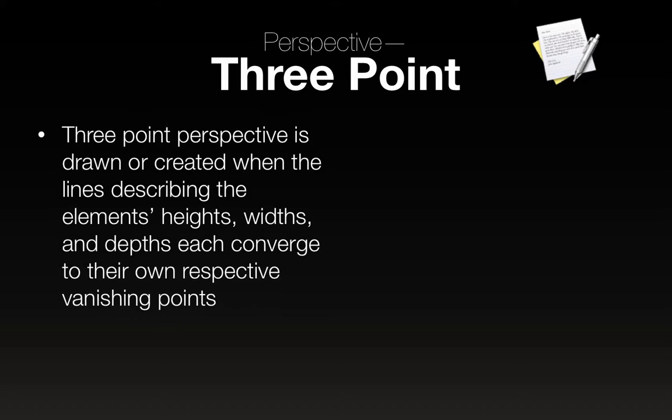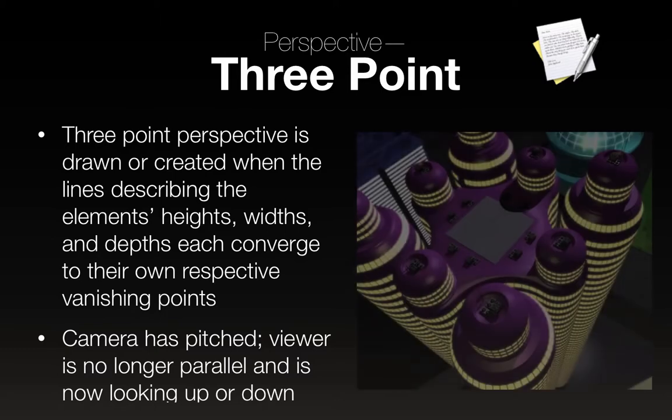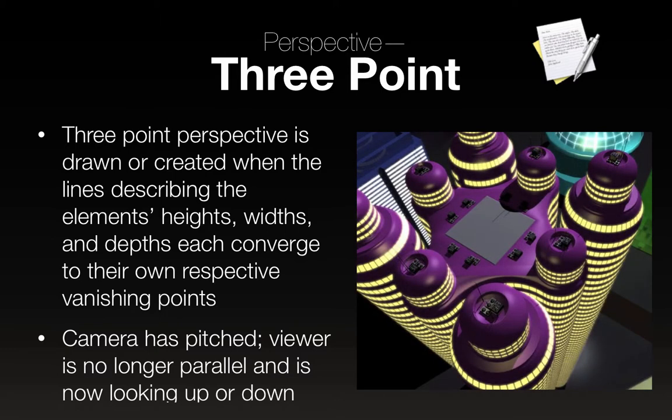Three-point perspective is created when the lines describing elements' heights, widths, and depths each converge to their own respective vanishing point. The camera has now pitched — the viewer is no longer parallel and is looking either up or down. Each set of lines vanishes to its own separate vanishing point.